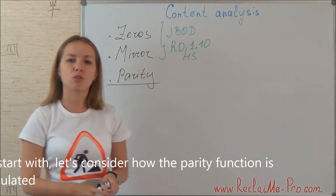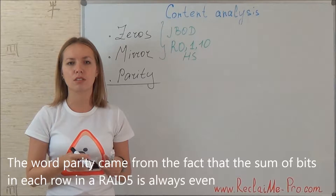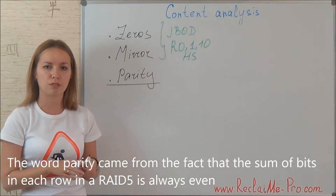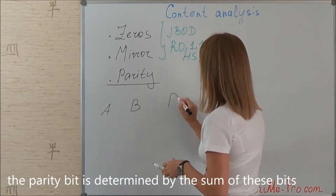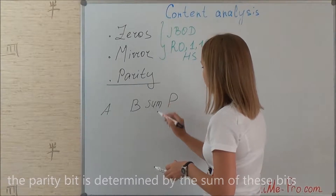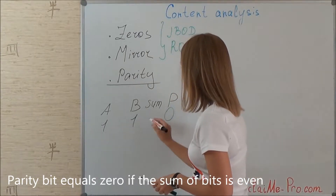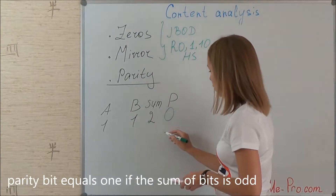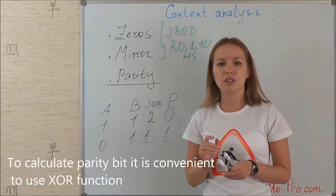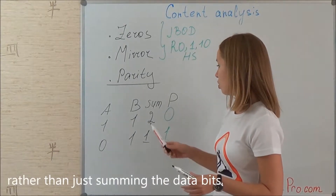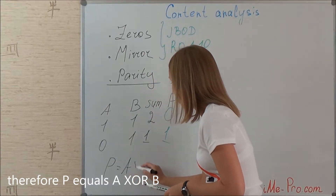In the previous video we discussed in detail how to apply these techniques. In this video I will focus on the parity analysis. To start with, let's consider how the parity function is calculated. The word parity comes from the fact that the sum of bits in each row in a RAID 5 is always even. If you have two data bits, say A and B, the parity bit is determined by the sum of these bits. The parity bit equals zero if the sum of bits is even, and equals one if the sum of bits is odd. To calculate the parity bit it is convenient to use the XOR function rather than just summing the data bits.